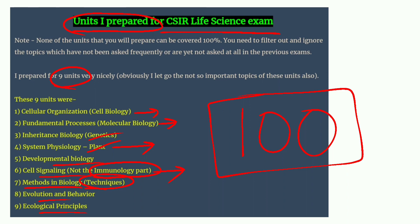Coming to plant physiology — if you look at the CSIR examination papers, plant physiology is an important unit. Animal physiology doesn't have as many questions, and those questions I found a little difficult to solve. So I decided, although I am a zoology student, to skip animal physiology. Plant physiology has basic questions and there are better chances that I can score, so I preferred plant physiology.